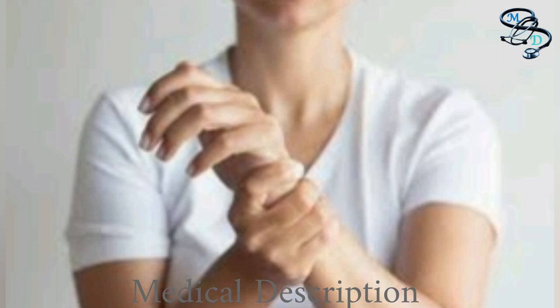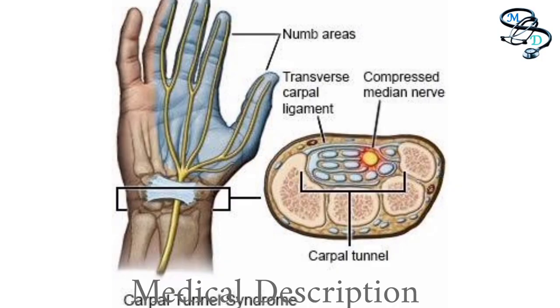Carpal tunnel syndrome is caused by pressure on the median nerve. The median nerve runs from the forearm through a passageway in the wrist — the carpal tunnel — to the hand. It provides sensation to the palm side of the thumb and fingers, except the little finger, and also provides nerve signals to move the muscles around the base of the thumb.